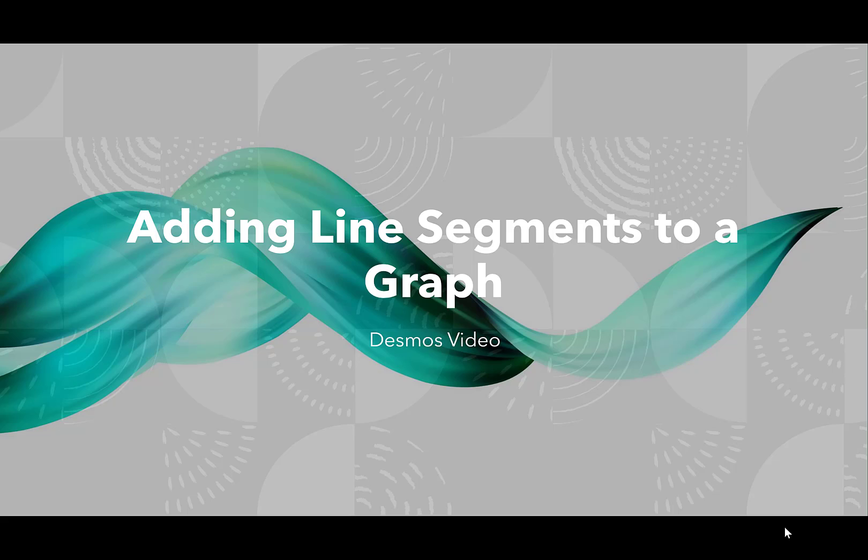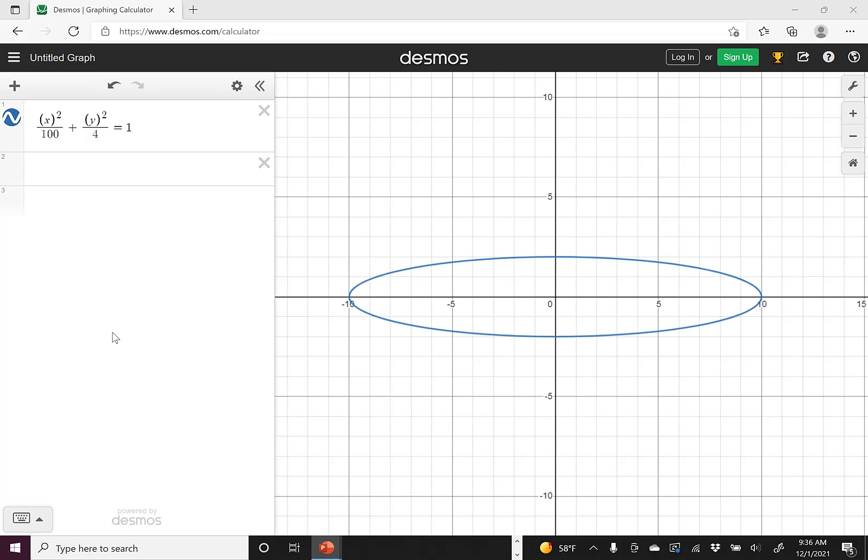And I'm going to do this using an ellipse. I'm going to put in line segments at regular intervals. So the graph I'm using is x squared over 100 plus y squared over 4 is equal to 1. So I have this ellipse with vertices at 10 and negative 10 on a major axis and on the minor axis I have 2 and negative 2.